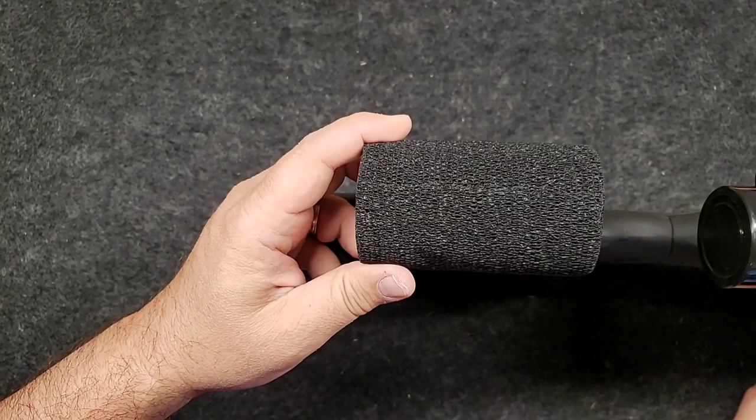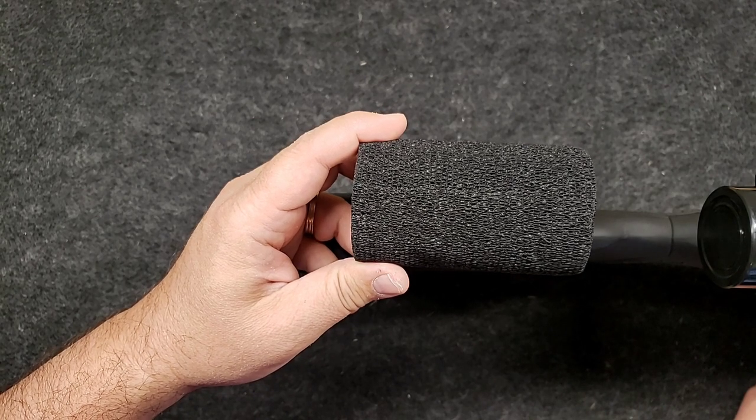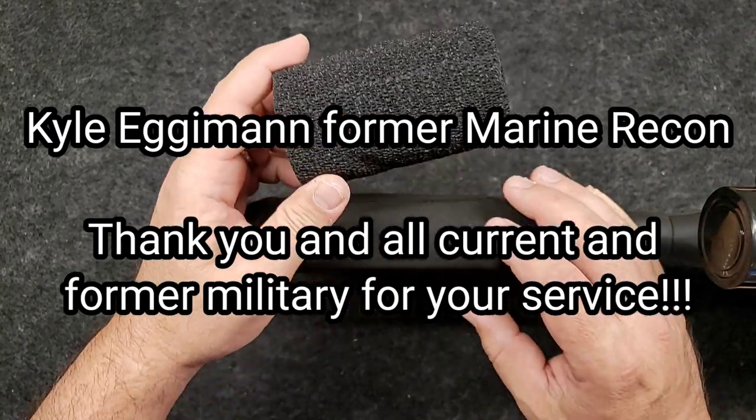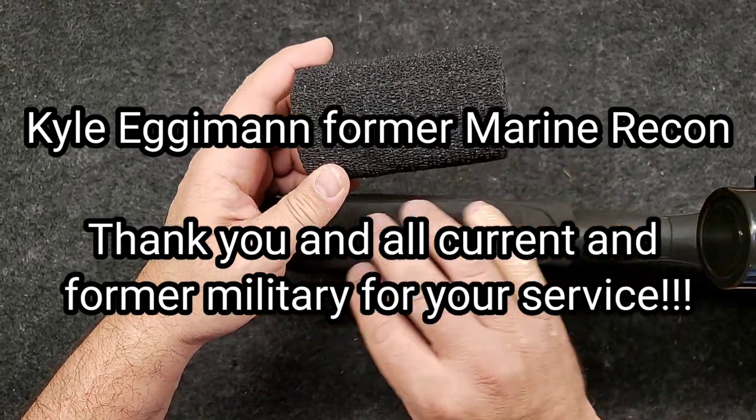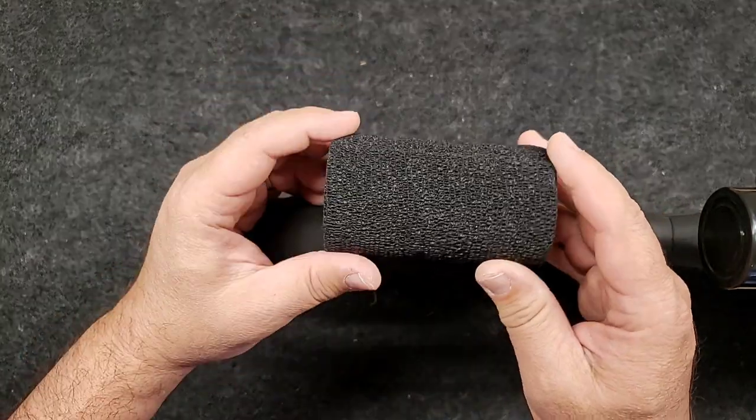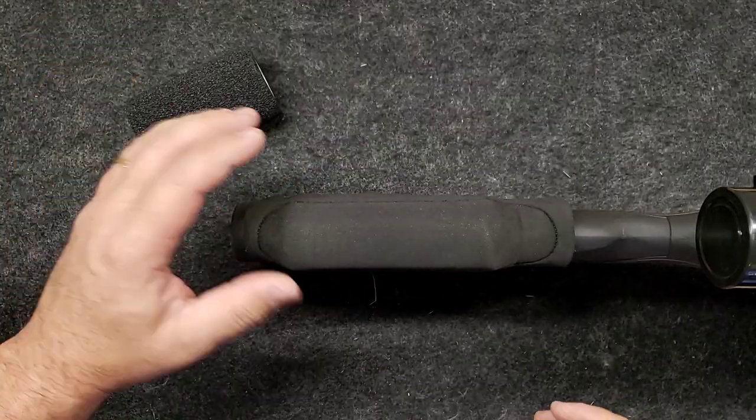I saw this online on Lucky Gunner - they had a military guy on there. This is something they do in the field to get their cheek rest going. They'll use their foam sleeping pad, cut it up, add some height to get their eye in line, and then use this vet tape to wrap it up.